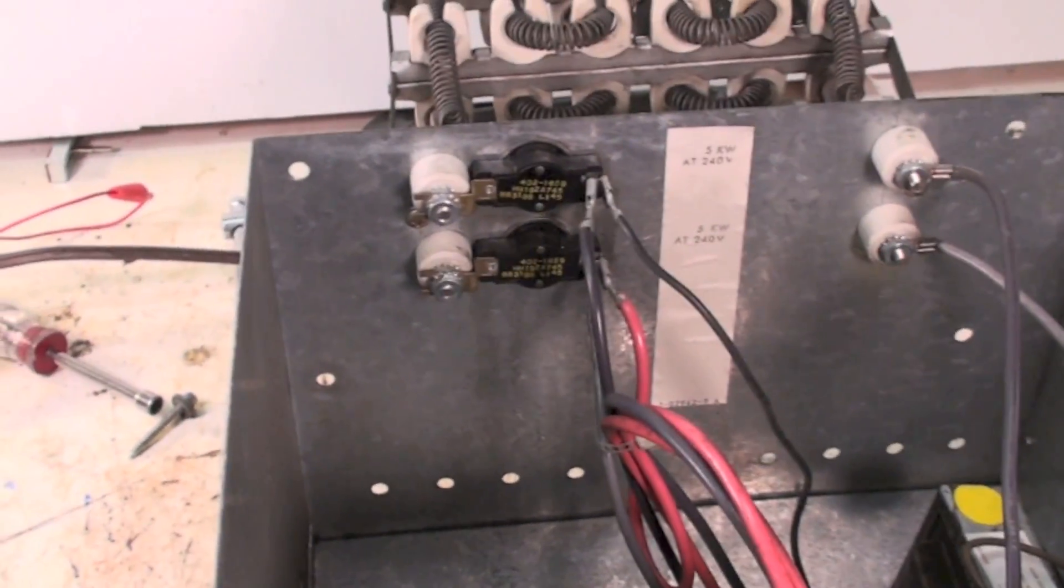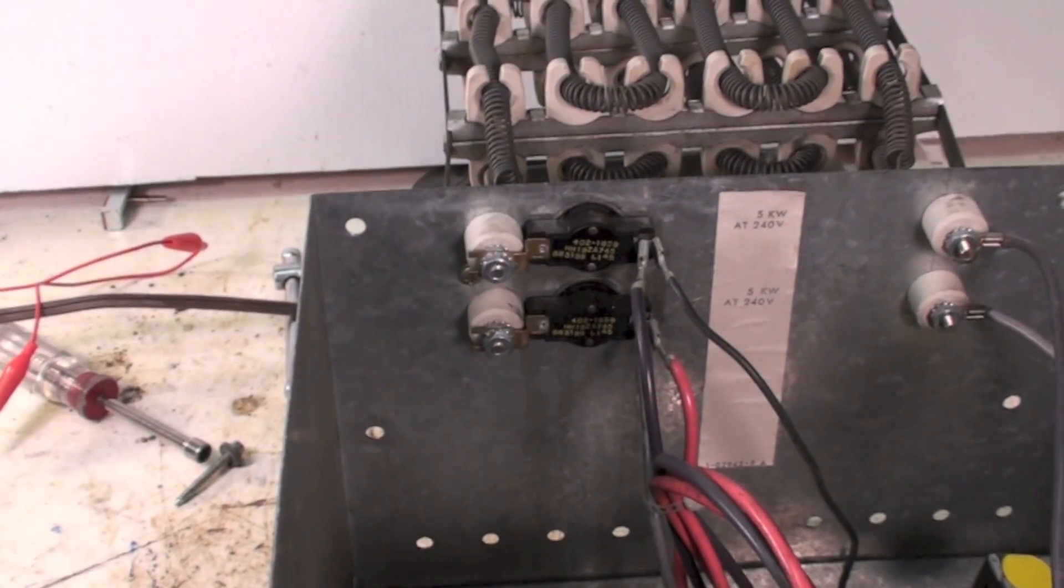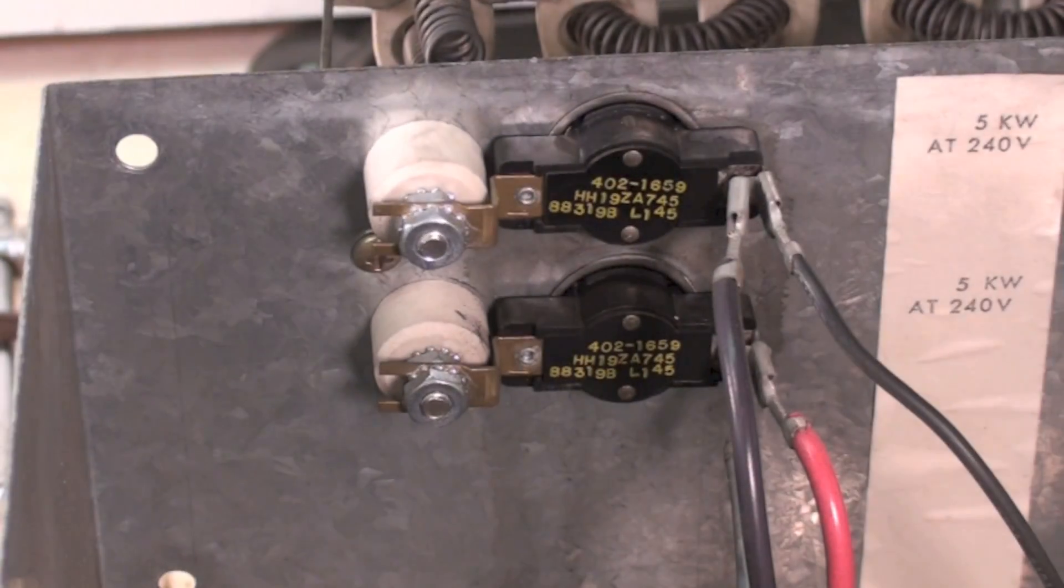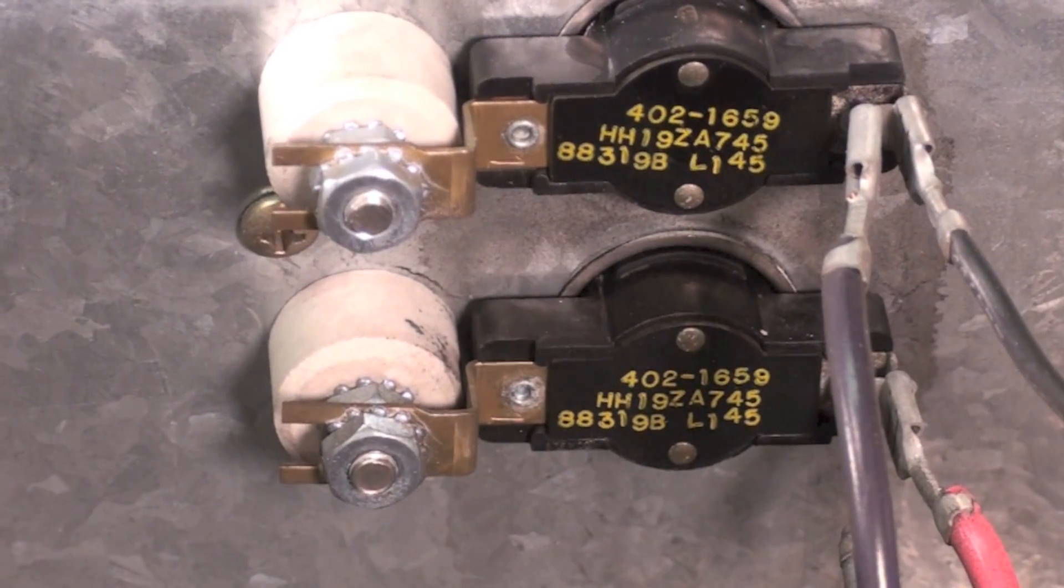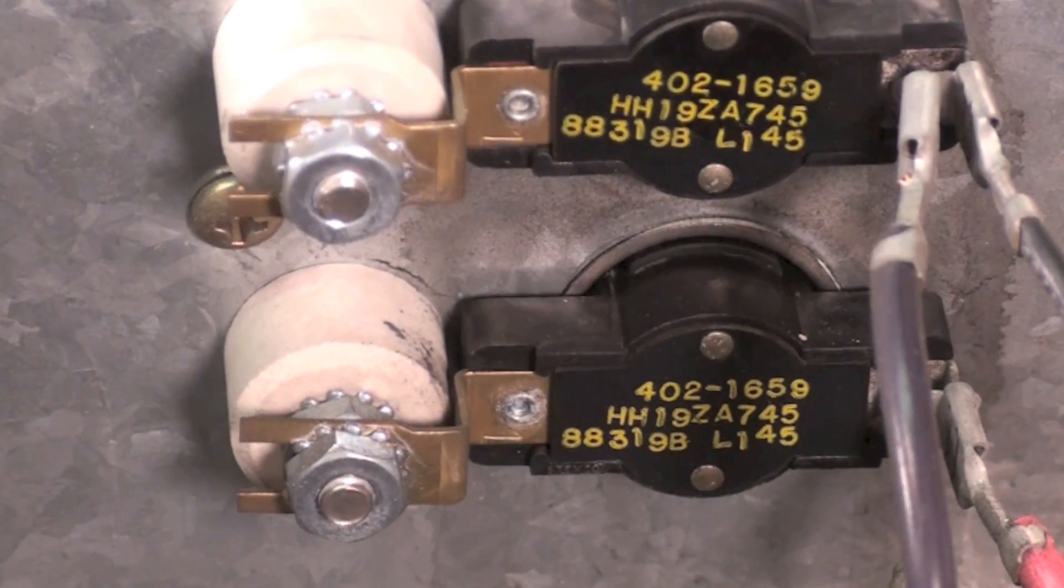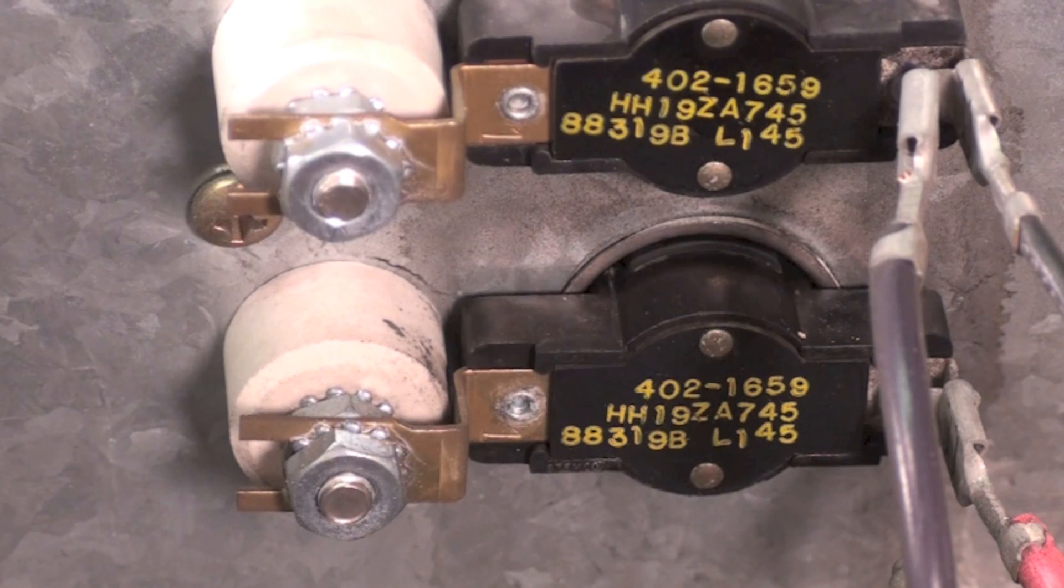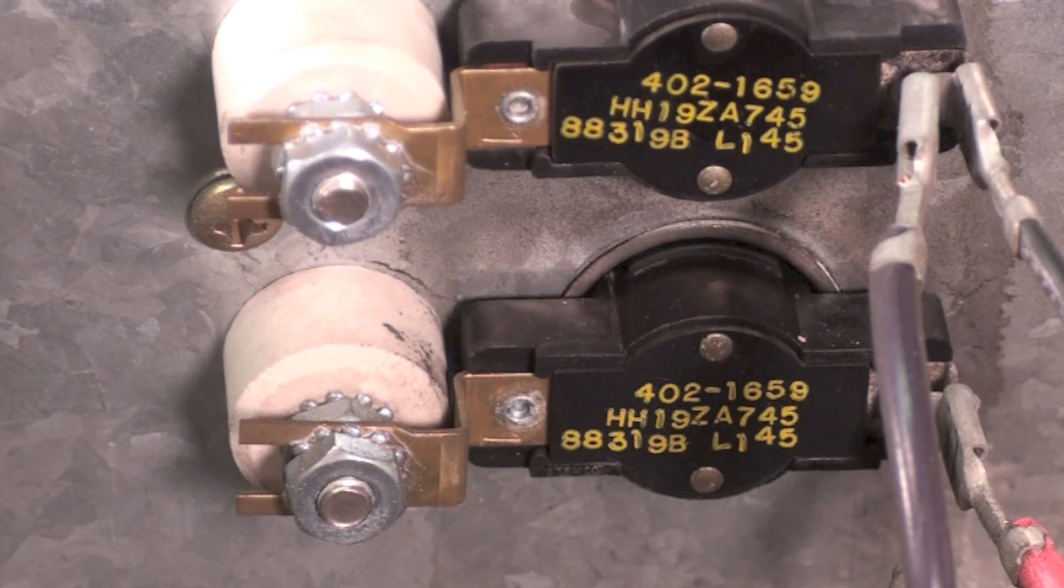On there, the middle one is a Carrier number - this is a Carrier heat strip. The bottom says L145.